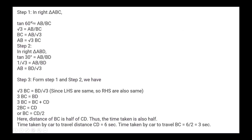In right triangle ABC: tan 60° = AB/BC, so BC = AB/√3. In right triangle ABD: tan 30° = AB/BD, so BD = AB√3. From these: 3·BC = BD = BC + CD, giving 2·BC = CD, so BC = CD/2. Since distance BC is half of CD and the car takes 6 seconds to travel CD, the time taken to travel BC = 6/2 = 3 seconds.